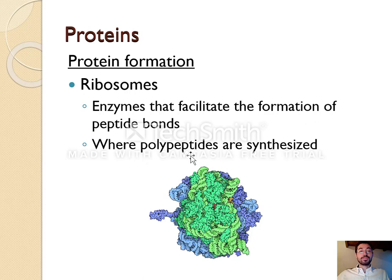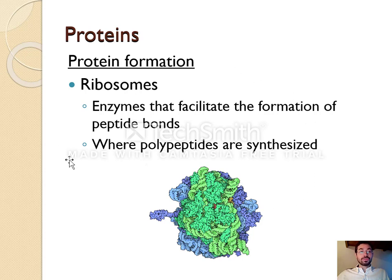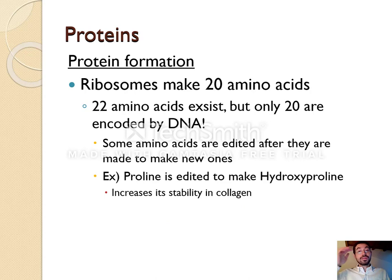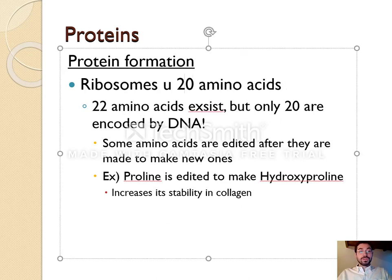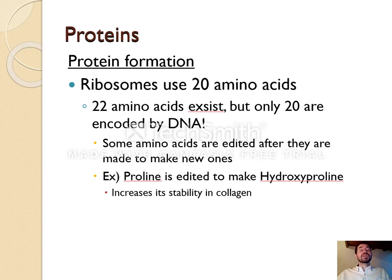And this is kind of what a ribosome looks like. You've probably already drawn prokaryotic and eukaryotic cells, and in those drawings you have to draw 70S or 80S ribosomes. Those ribosomes are usually drawn as dots. So these are the ribosomes that make proteins. There are 20 different amino acids and ribosomes use those 20 different amino acids to make polypeptides.